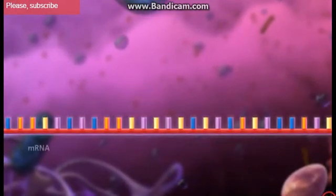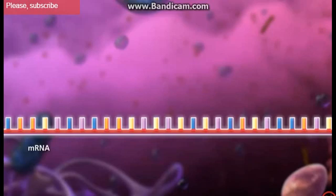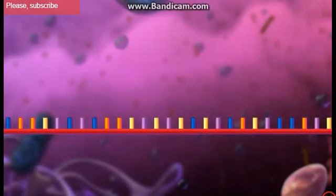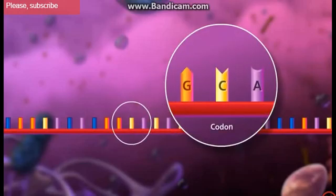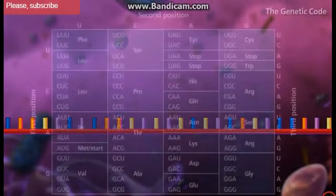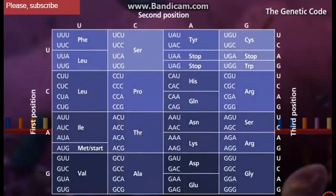How is the information in the mature messenger RNA strand translated into a protein? The nitrogenous bases are grouped into three letter codes called codons. The genetic code includes 64 codons.